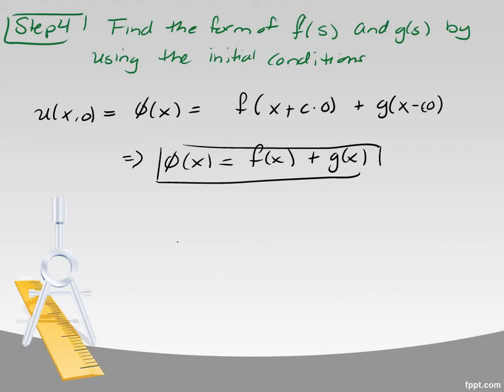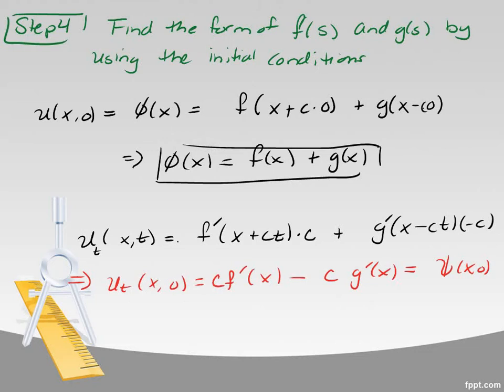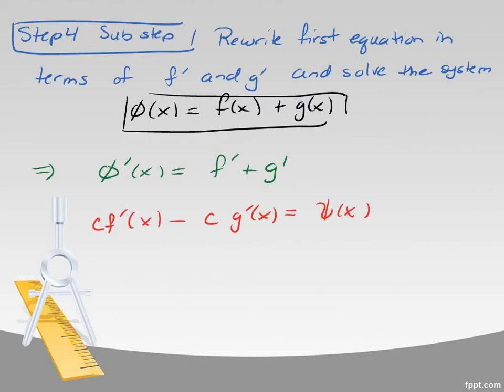I'm going to apply the initial condition. The initial condition u(x,0) is equal to φ(x). If I plug that in, it means that φ(x) is equal to f plus g. If I take the derivative with respect to t of x and t, I get this mess and the c's come out from chain rule. And if I plug in zero, I get the relationship that c f' minus c g' is really ψ. So I have a system of two equations, basically. But the problem is the first equation on the top that's boxed off has f's and g's and the second equation has f primes and g primes, but I can take the derivative and come up with an equation with f prime and g prime and φ primes and ψ.